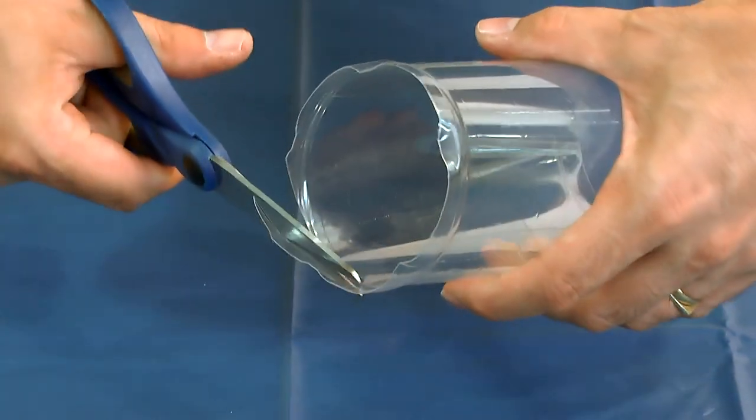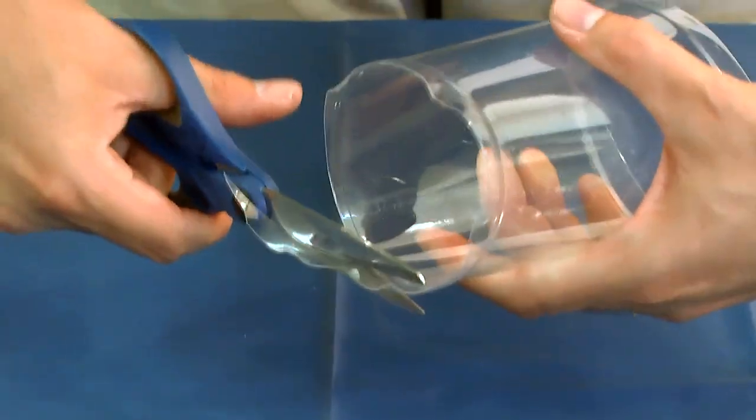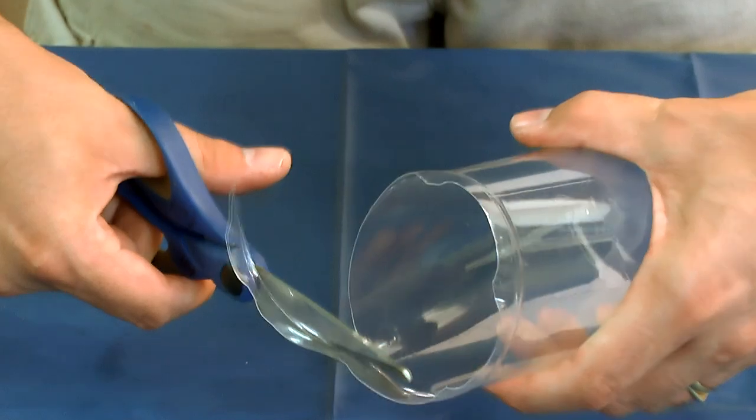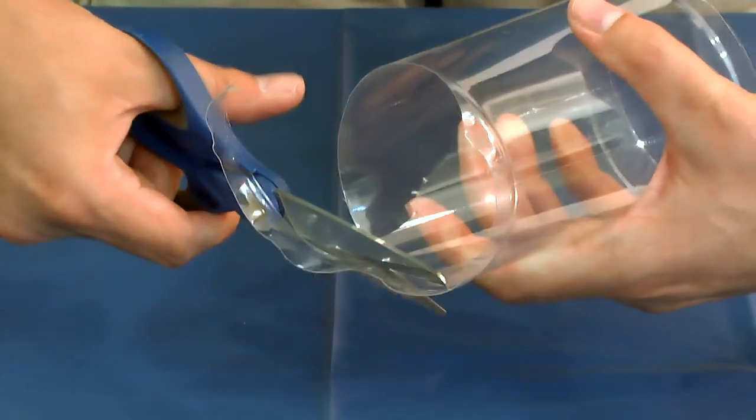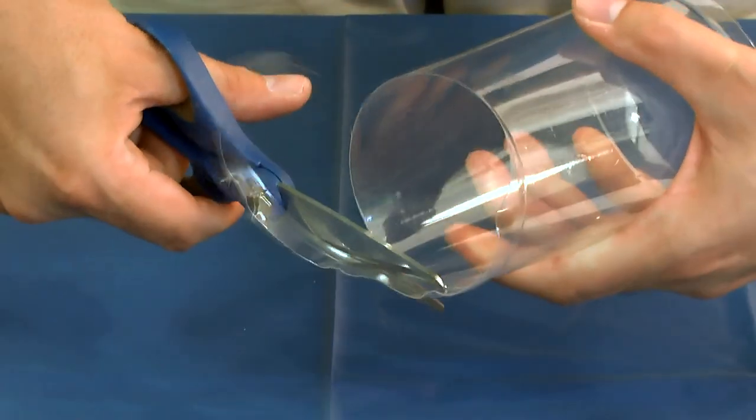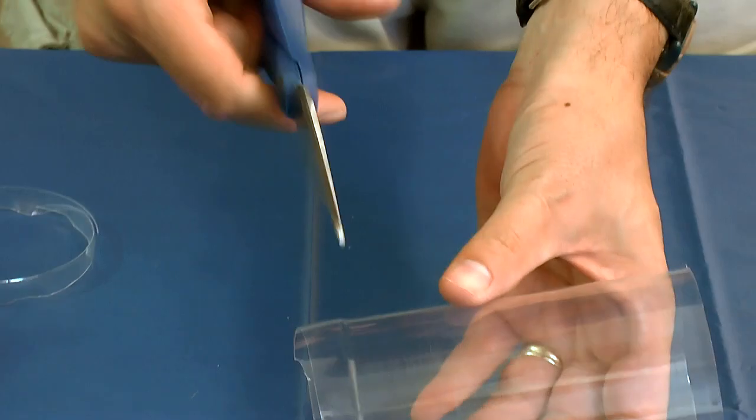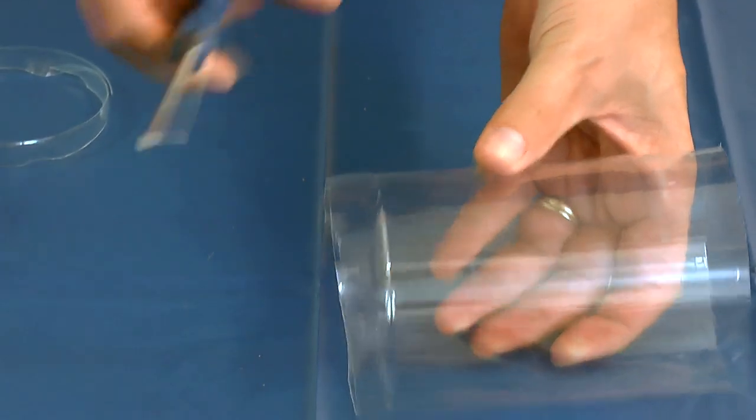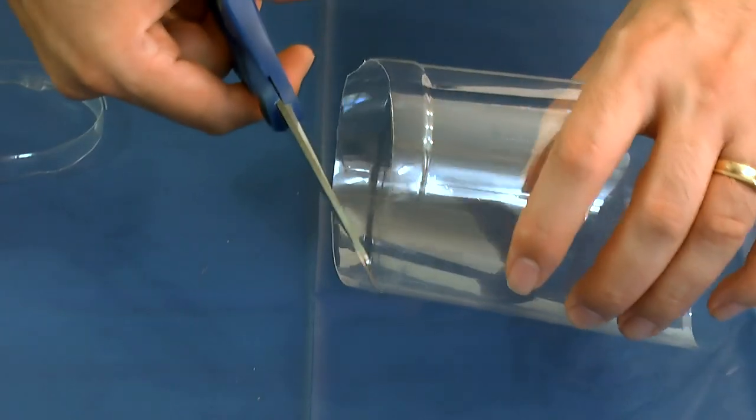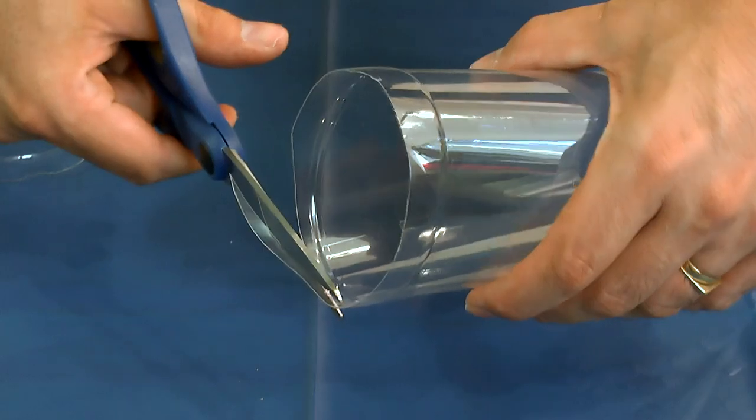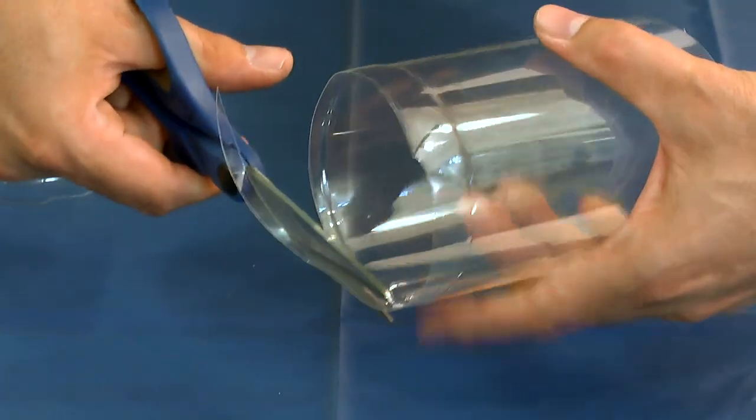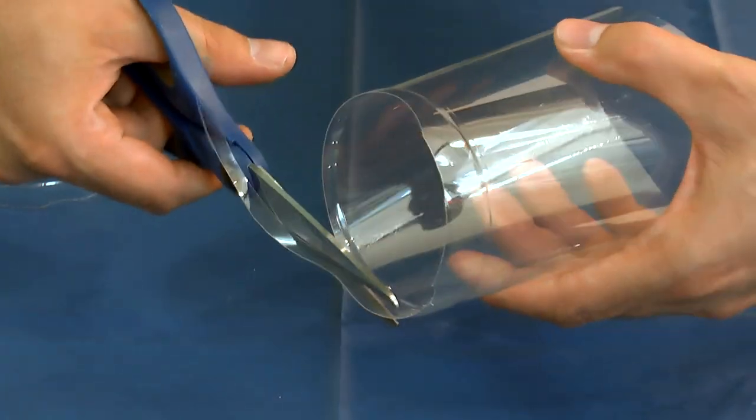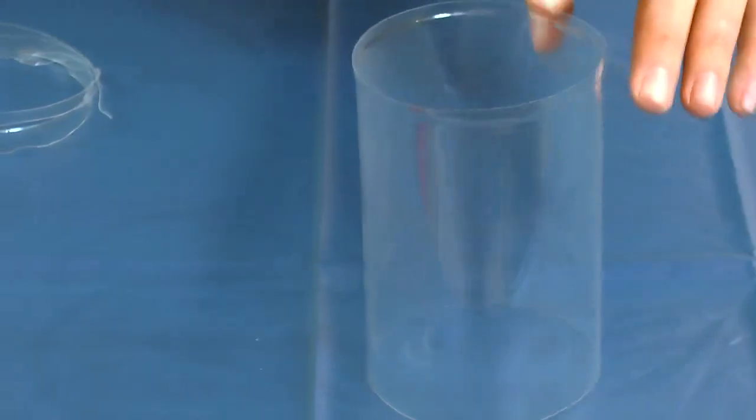You need to trim the bottom off. And when you cut the top, leave about 5mm of the ridge. Do that for both bottles.